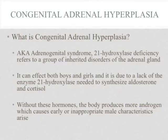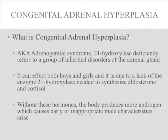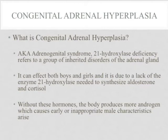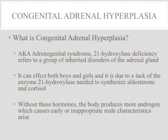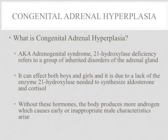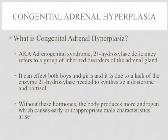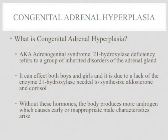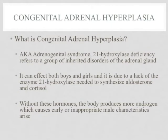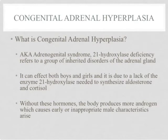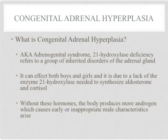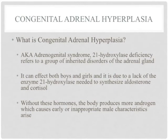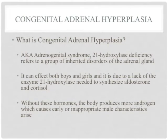Congenital adrenal hyperplasia, also called adrenogenital syndrome, refers to a group of inherited disorders of the adrenal gland. It can affect both boys and girls. Congenital adrenal hyperplasia is due to a lack of 21-hydroxylase. Without this enzyme, adrenal glands cannot make aldosterone and cortisol. This insufficiency causes the body to produce more androgens because low levels of cortisol and aldosterone cause more ACTH to be secreted from the pituitary. As discussed earlier, ACTH secretion is also the stimulus for androgen secretion. Therefore, congenital adrenal hyperplasia results in the development of inappropriate male characteristics.